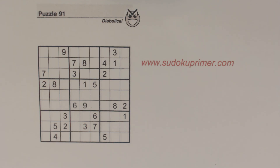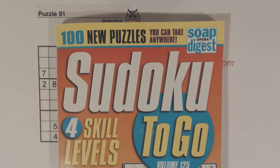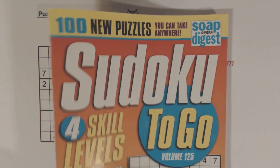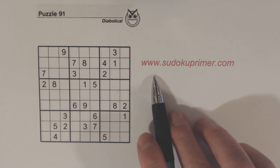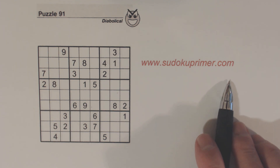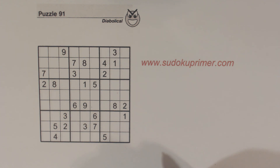This is puzzle number 91, a diabolical puzzle from Sudoku to Go, volume 125 by Soap Opera Digest. In this video we're going to go over the Sudoku Opposite Pattern and give you examples of how powerful and useful this pattern is. I'm Harold Nolte and I have over 160 videos on Sudoku on this channel. There's also a website, SudokuPrimer.com, where you can find lots of information about techniques, patterns, and other Sudoku information. Thank you for your comments — I enjoy reading them and when you have questions I like answering them and helping you understand Sudoku better.